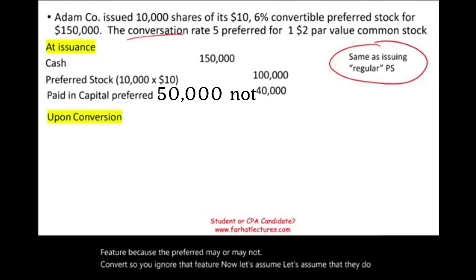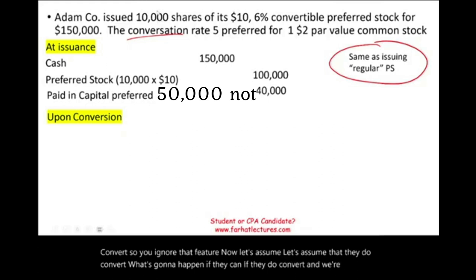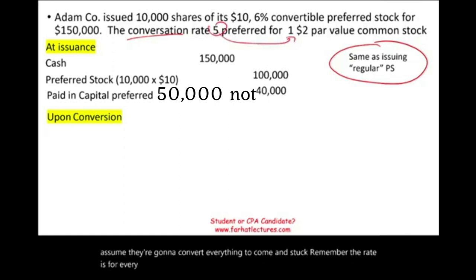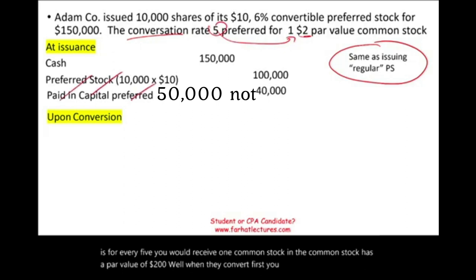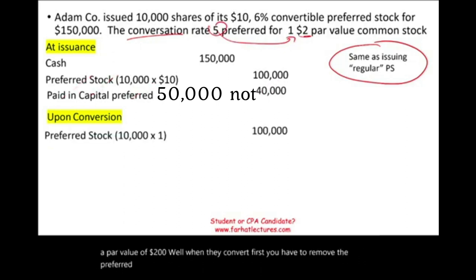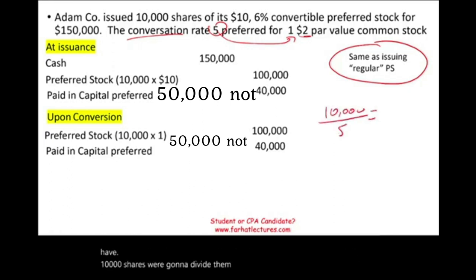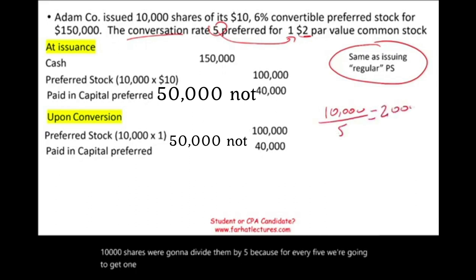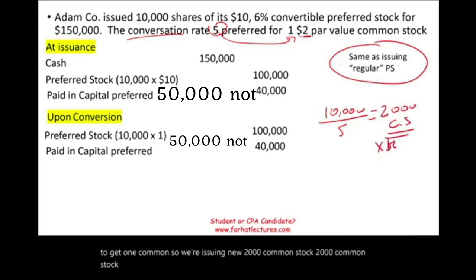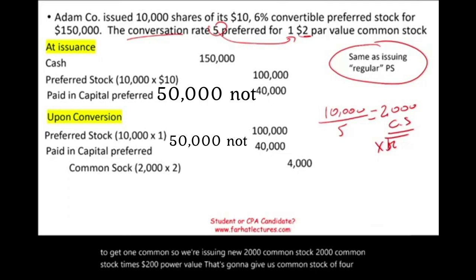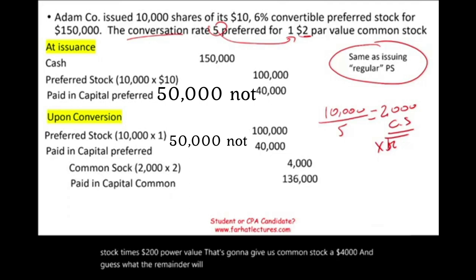Now let's assume all preferred shares convert to common stock. The conversion rate is five preferred shares for one common share, with a $2 par value on the common. First, remove the preferred stock and its paid-in capital: debit preferred stock $100,000 and debit paid-in capital — preferred $40,000. Next, issue the new common stock: 10,000 preferred shares ÷ 5 = 2,000 new common shares. 2,000 shares × $2 par value = $4,000 credited to common stock, and the remainder — $136,000 — is credited to paid-in capital — common stock.